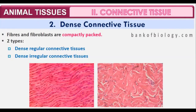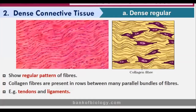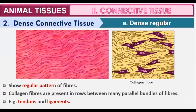Dense regular connective tissue shows a regular pattern of fibers. Collagen fibers are present in rows between many parallel bundles of fibers. As you can see in the diagram, these collagen fibers are arranged in rows, with many parallel bundles of fibers placed alongside and the collagen fibers placed in between them.